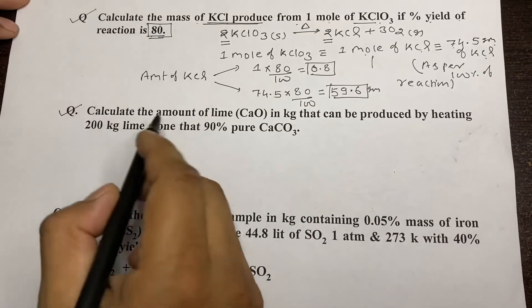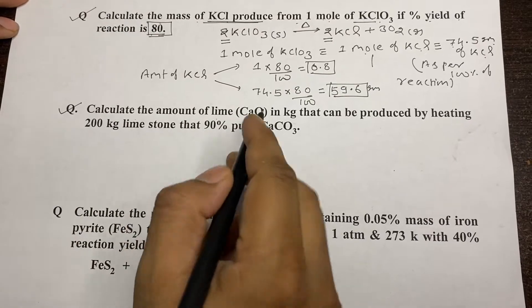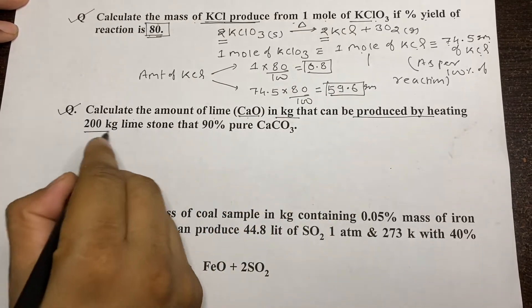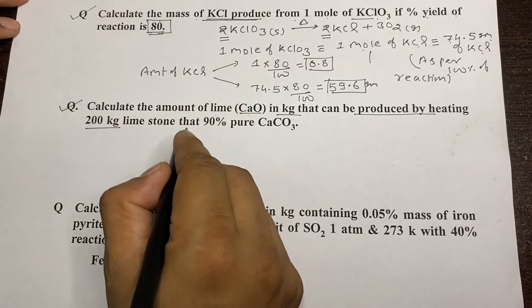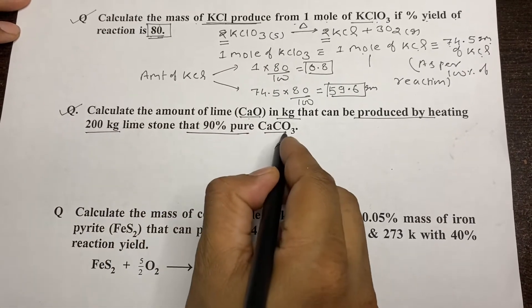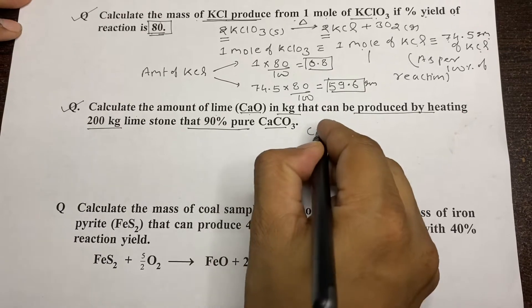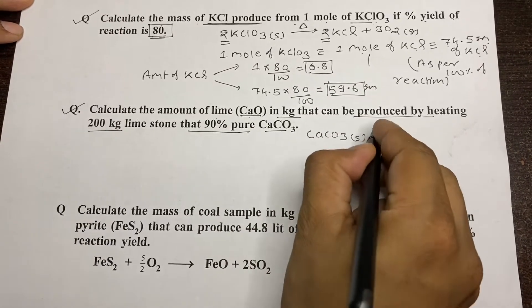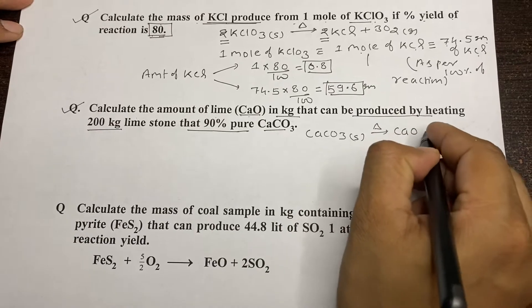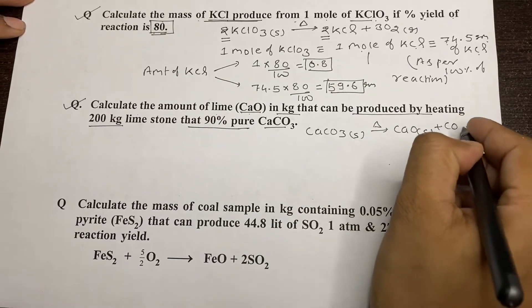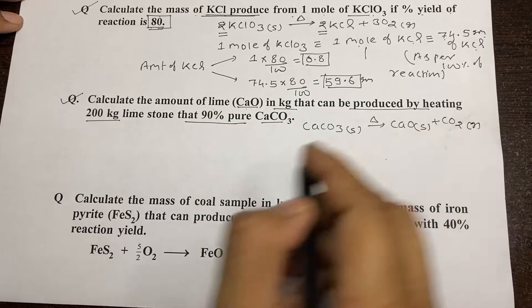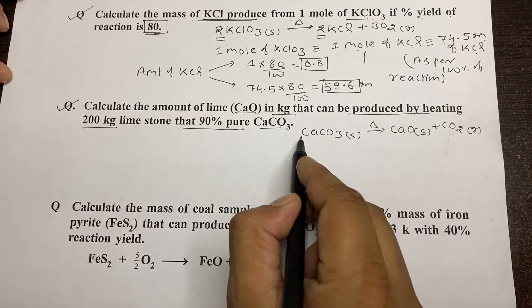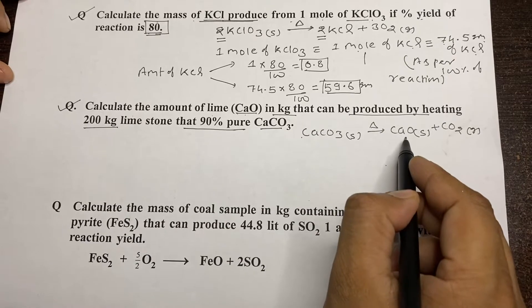Calculate the amount of lime (CaO) in kg that can be produced by heating 200 kg of limestone that is 90% pure calcium carbonate. We write the balanced decomposition reaction for limestone: one mole of CaCO₃ on heating gives one mole of CaO (lime).